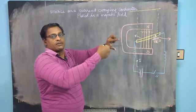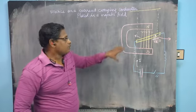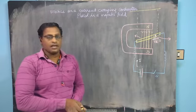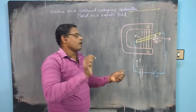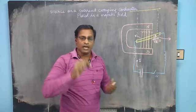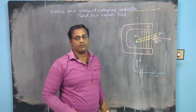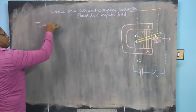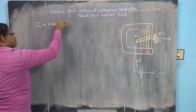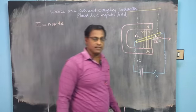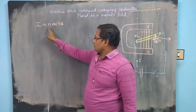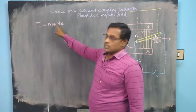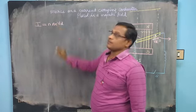This is what happens when a current carrying conductor is placed in a uniform magnetic field. You all know that the current I is equal to nAeVd, where n is the number of electrons, A is the area of cross section, e is the charge of the electron, and Vd is the drift velocity of the electron.